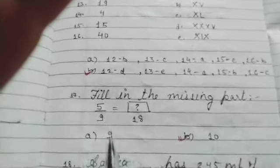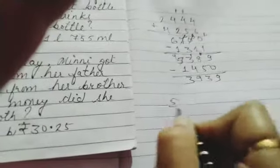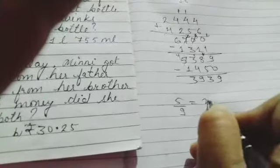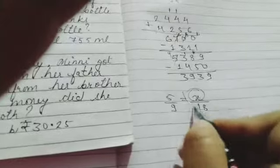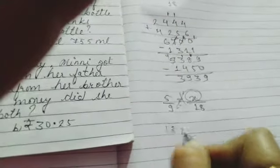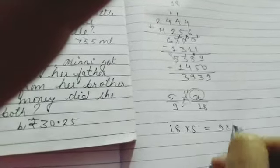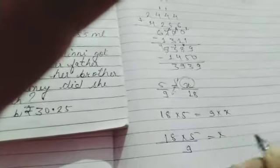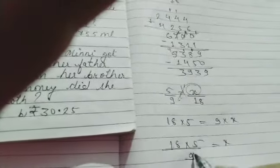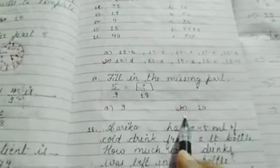Fill in the missing part. 5 upon 9 is equals to dash upon 18. Let this number be X. Cross multiply. So 18 into 5 equal to 9 into X. So it will be 18 into 5 upon 9 is equals to X. So 9 goes into 18 twice. So 5 times 2 is 10. So our answer will be 10.